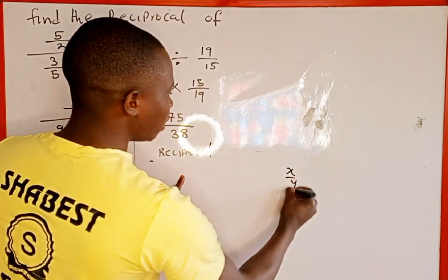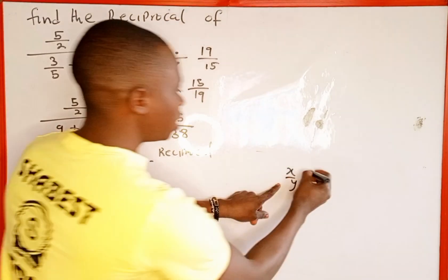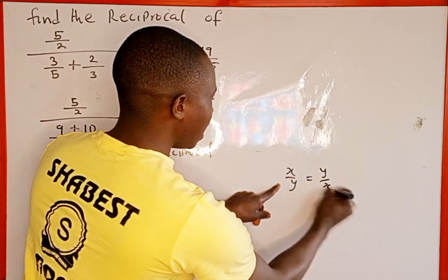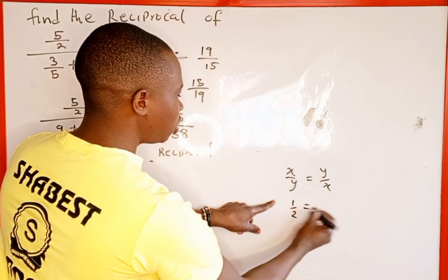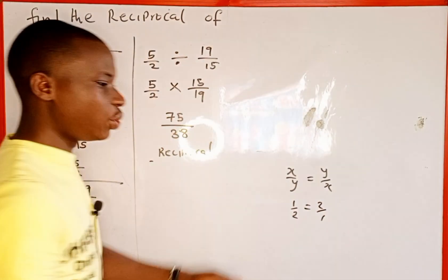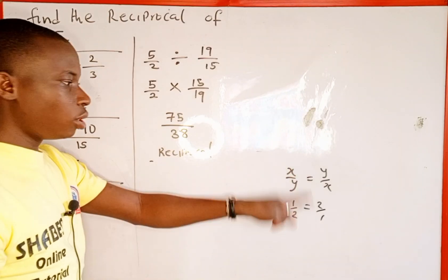Now the reciprocal, remember, when we have x over y, the reciprocal of x over y is the same as y over x. When we have 1 over 2, the reciprocal is 2 over 1.